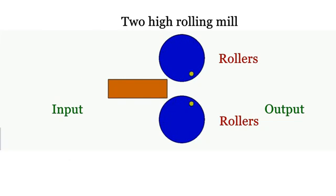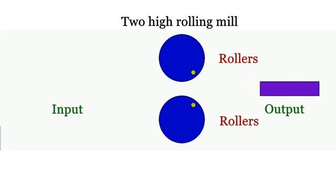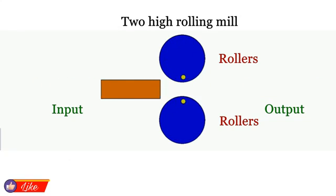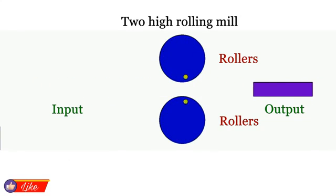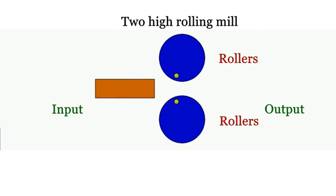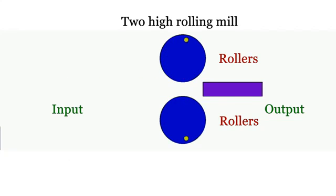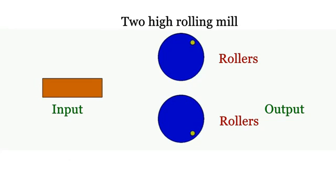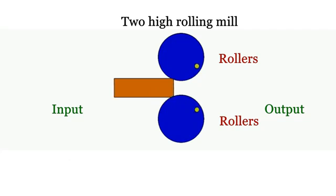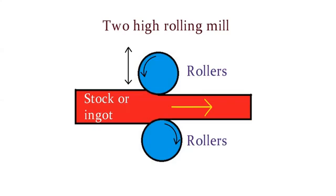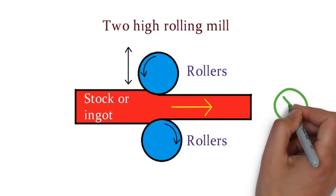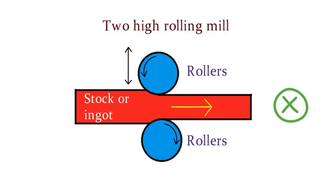In this case, the stock or ingot is fed to the rolling mill from the left side. The two rollers will exert large amount of pressure on the stock and force it out to the right side, which results in decrease in the thickness of metal stock. Due to the direction of rotation of two rollers, we are unable to feed ingot from right side, so it is known as non-reversing rolling mill.